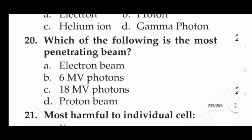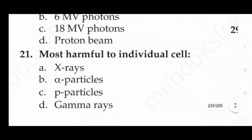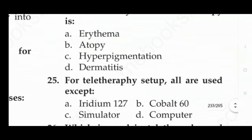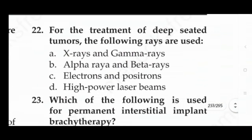Next question: most harmful to an individual cell — option A: X-rays, option B: alpha rays, option C: beta particles, option D: gamma rays. The answer is option B, that is alpha particles.